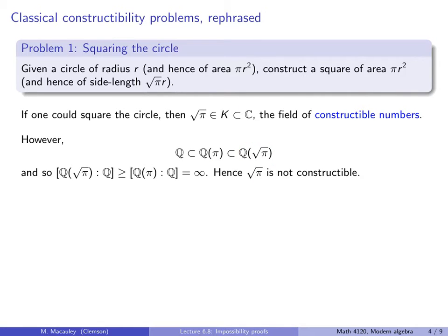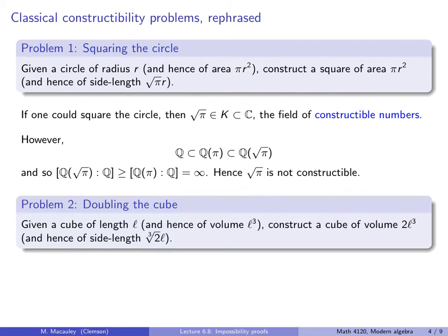Hence, the square root of pi is not constructible. Next, problem two, doubling the cube.